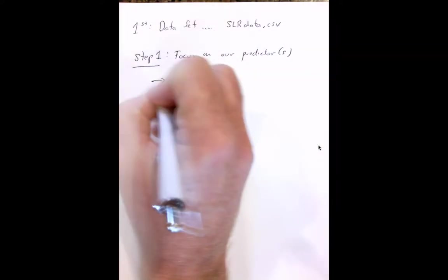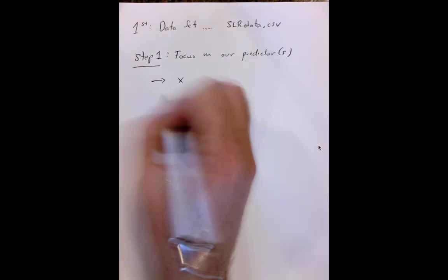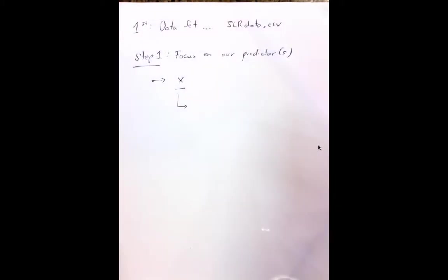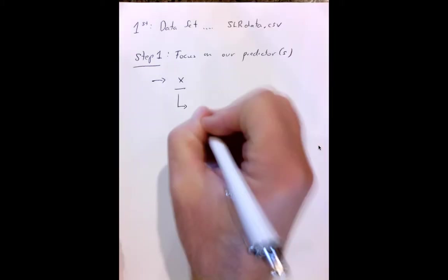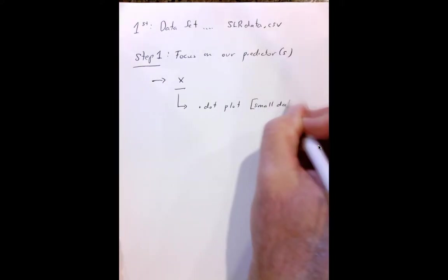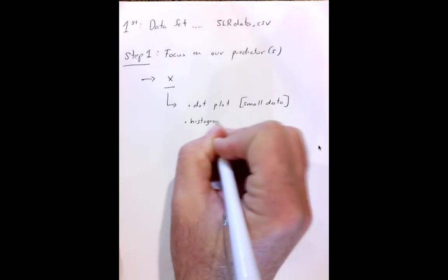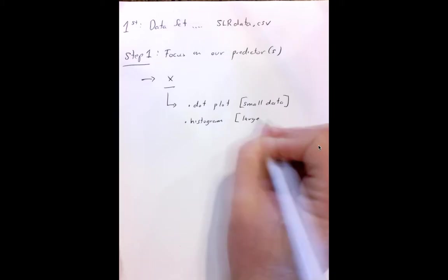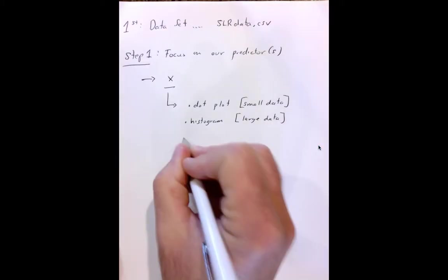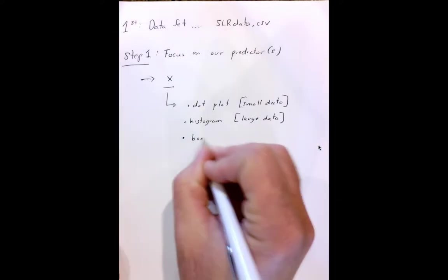So focus on our predictors. What I want to do in this case is just put all my focus on x, as I've called it, in the data set. The kinds of things I'd want to look at here are just simply a dot plot. These things work really well if you have small data. Something else I'd want to look at is a histogram. This works well when we have large data. Typically, I think of large data, 50 or higher; dot plot, small data, something less than that.